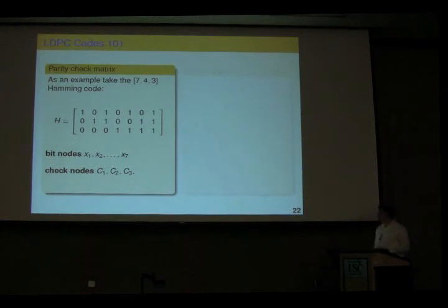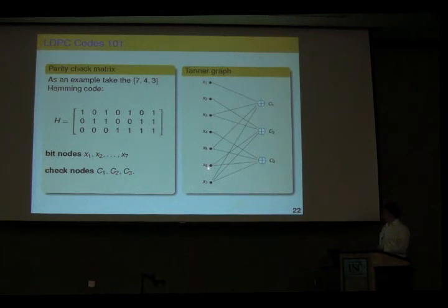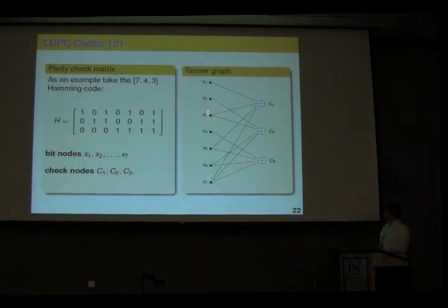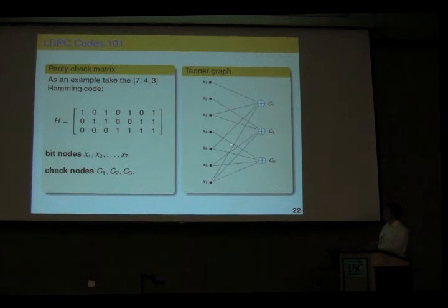Very briefly, how does LDPC coding work? You start with the parity check matrix of your code and come up with a bipartite Tanner graph: information bits correspond to symbols in your codeword on the left, and each row of the parity check matrix corresponds to one check node. You connect a variable node to a check node if and only if there's a 1 in the corresponding matrix entry. A decoding algorithm called message passing is associated to this graph.